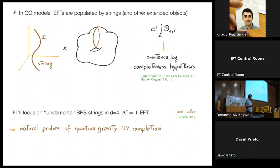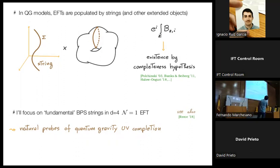The presence of strings in a four-dimensional effective field theory is quite familiar in string theory models, where the strings typically uplift to some higher-dimensional brane wrapping some internal cycle. More generally, in a quantum gravity theory, the existence of strings is implied by the completeness hypothesis whenever there appear some two-form potentials in the effective field theory. I will focus on strings which are BPS in an effective field theory preserving minimal supersymmetry at the UV cutoff scale, which can be broken at lower energy scales.